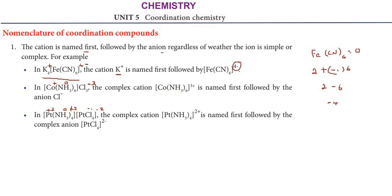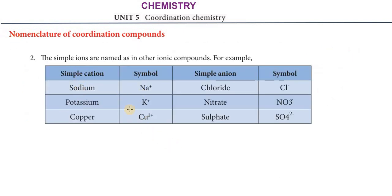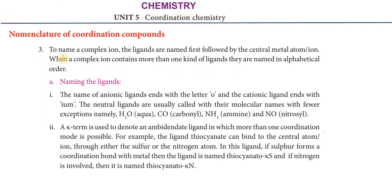The second rule is about naming the ligands. In a simple ionic compound, the anion name ends with 'ide' — for example, potassium chloride, nitrate. Within a complex ion, the ligands are named first followed by the central metal atom. The ligands are listed first, then the central metal atom name comes after.